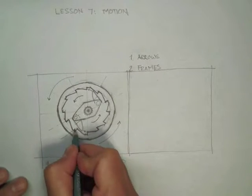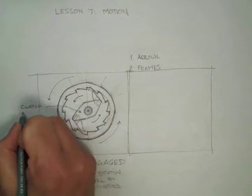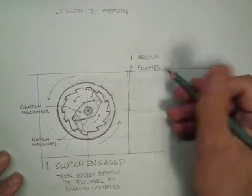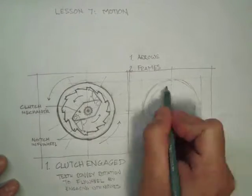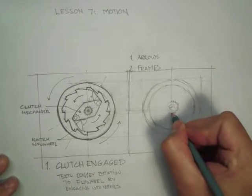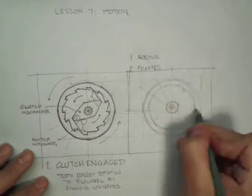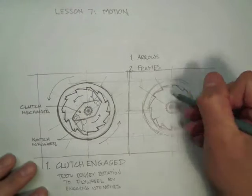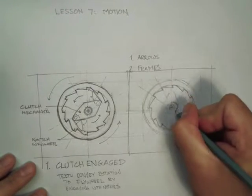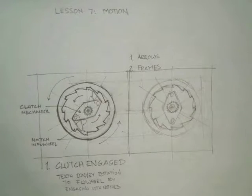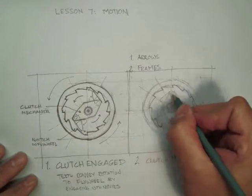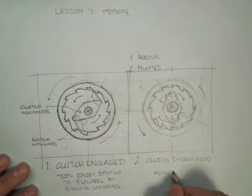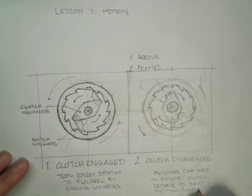In the first frame we show the clutch engaged. We use some leaders with text to call out the parts of the mechanism. Then we move on to a second frame in which we draw the same scene. Make sure you draw the same scene from the same angle and clearly label that this is a different state — in this case, clutch disengaged. That different state is going to show the other key frame in the functioning of the device. You can see how the teeth are retracted back against the main body of the clutch mechanism.